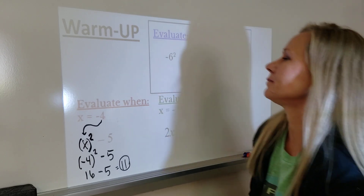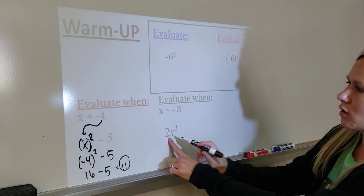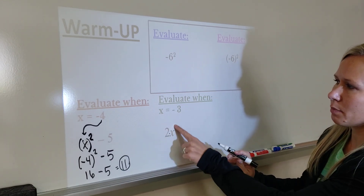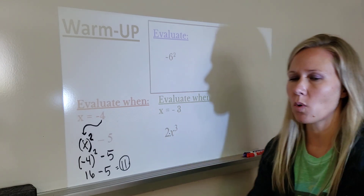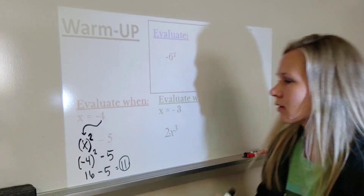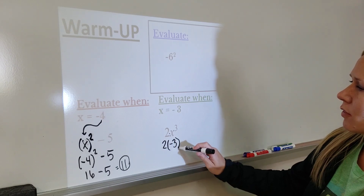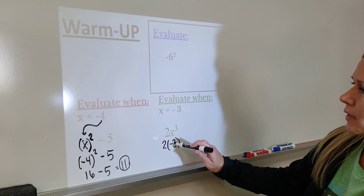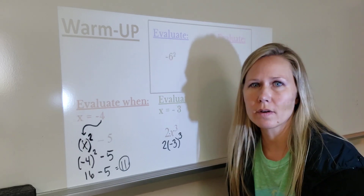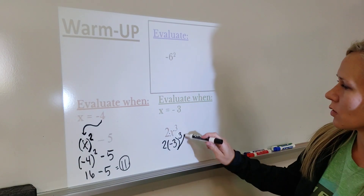On this one, we're told that x is negative 3. Do you see how here this is multiplication? But because I'm going to be replacing the x with a negative number, I want parentheses around the x — always. So I'm going to write two parentheses around the x, negative 3, replacing it with the negative 3, and then cubed. Now I do order of operations, so exponent first.